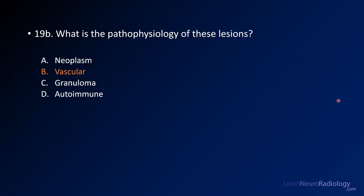Regarding pathophysiology, these are vascular lesions — they're not neoplastic, which is why the term hemangioma has fallen out of favor. Granulomatous disease in the eye — you might think about sarcoid. Autoimmune disease of the eye that can look similar includes idiopathic orbital inflammation or IgG4-related orbital inflammatory disease.